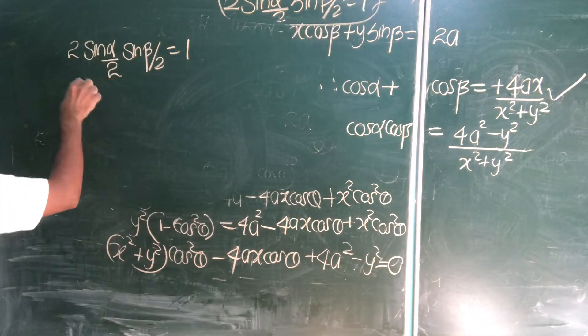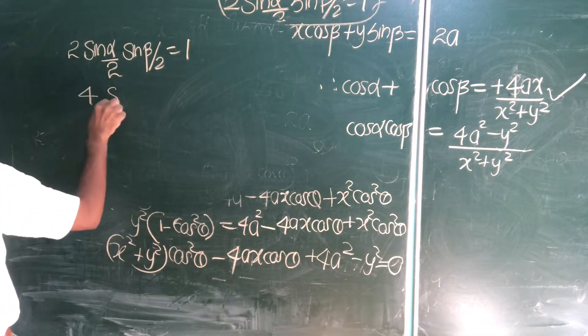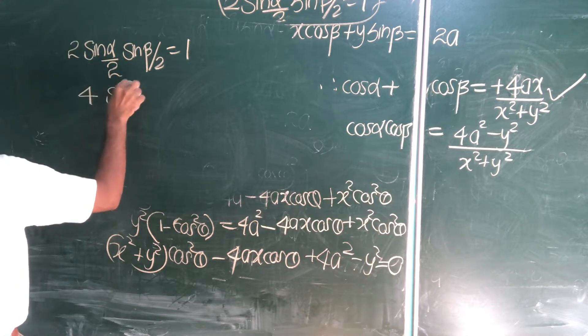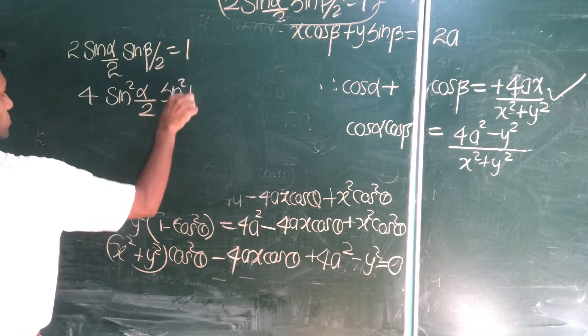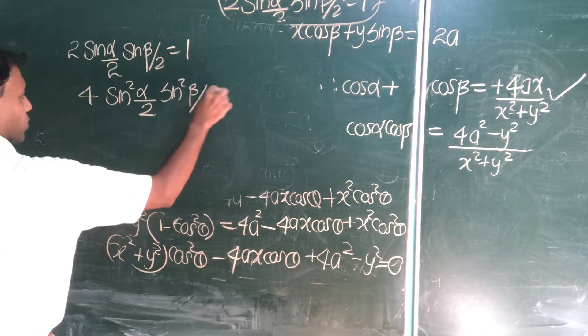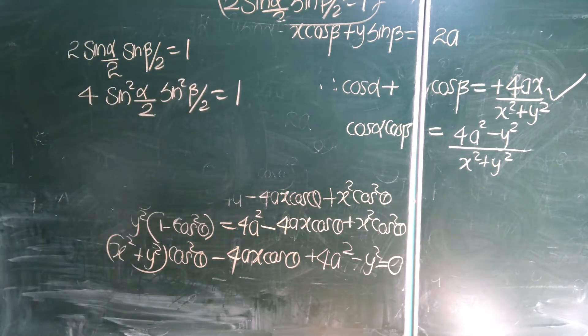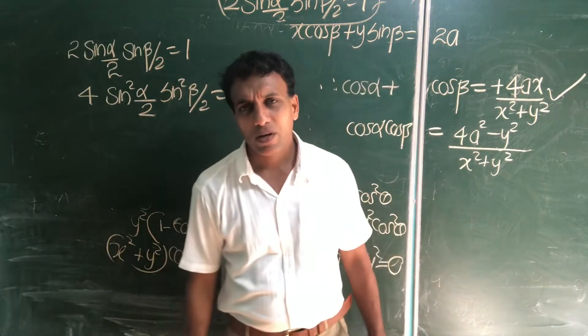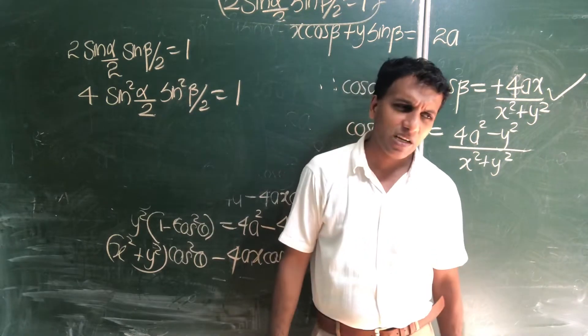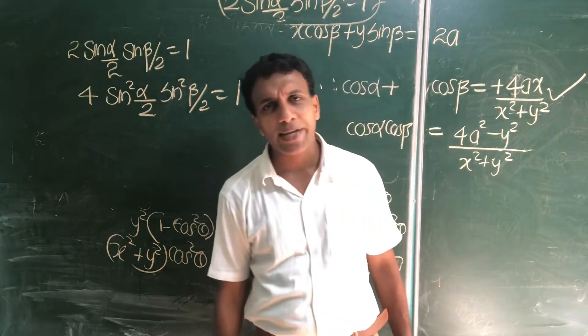Square it, both sides, equal to 1. Is it okay? Right? Square both sides. What is cos 2 alpha? What is cos 2 theta? 2 cos square theta minus 1.